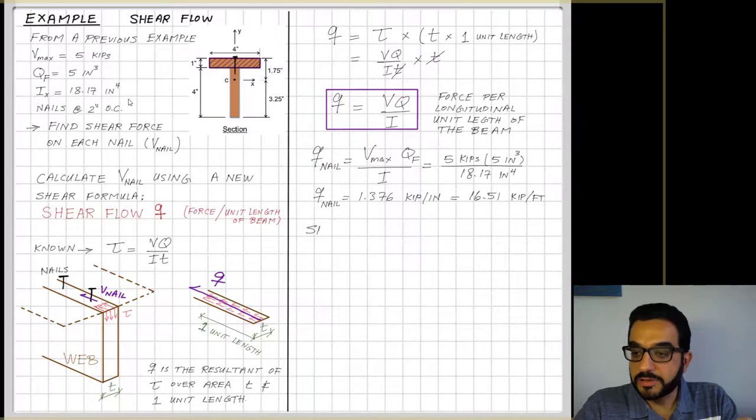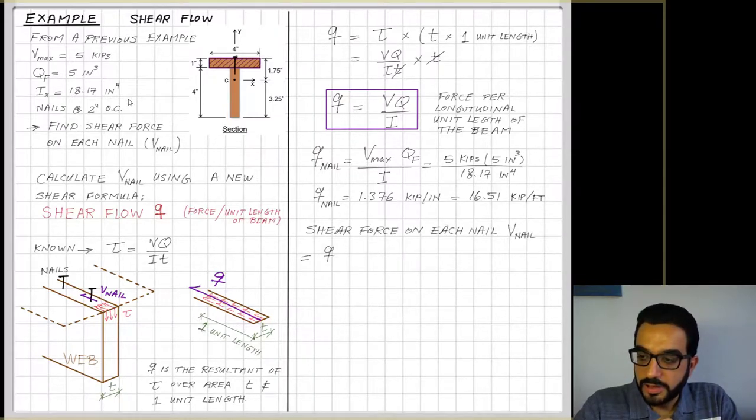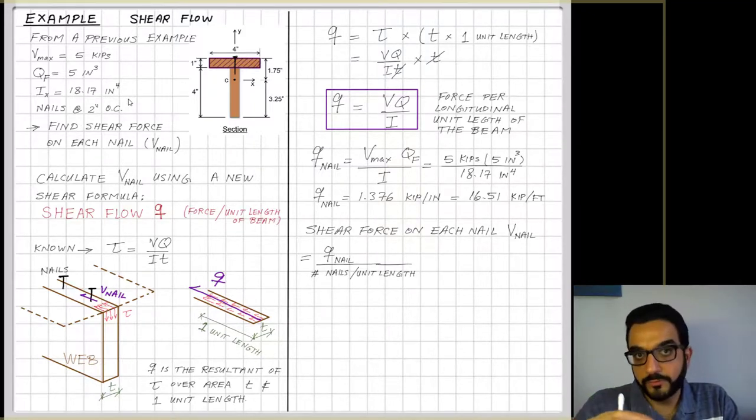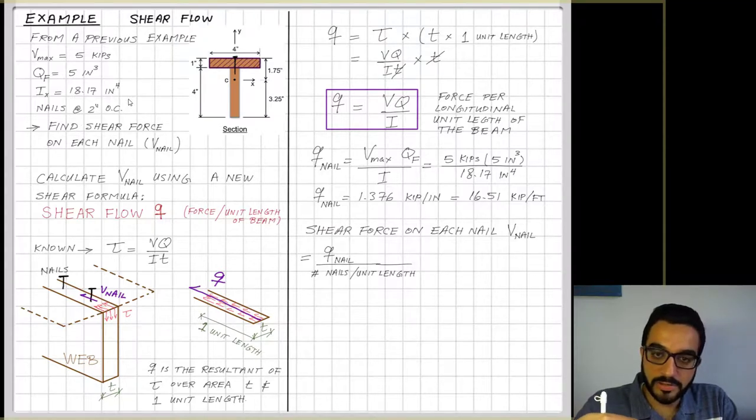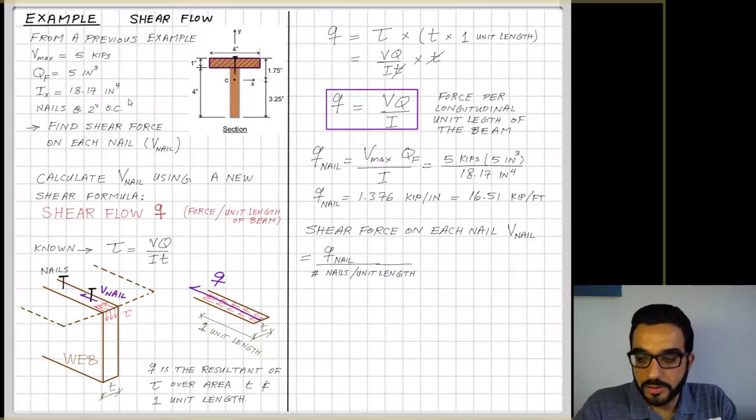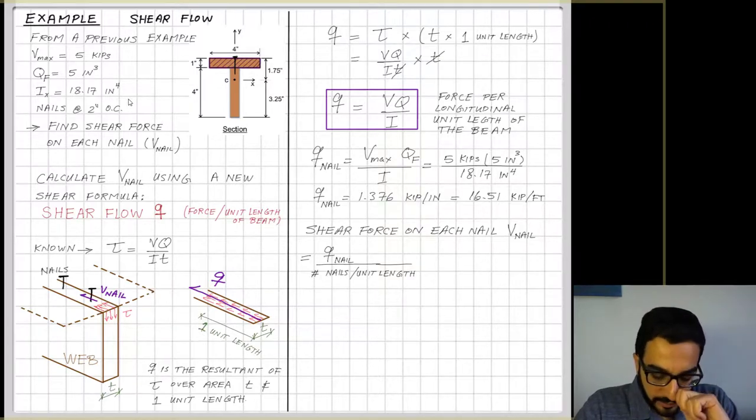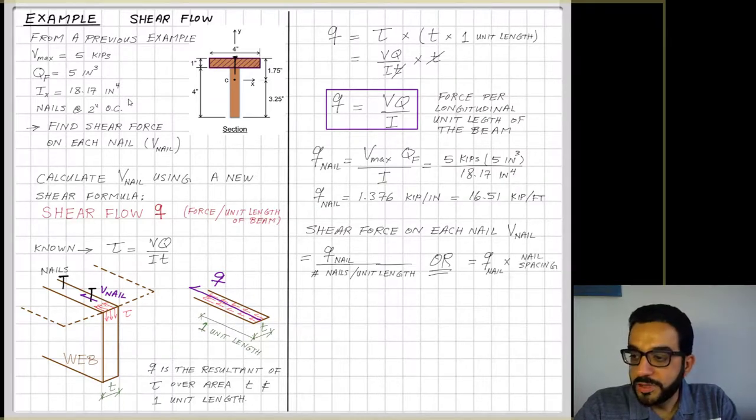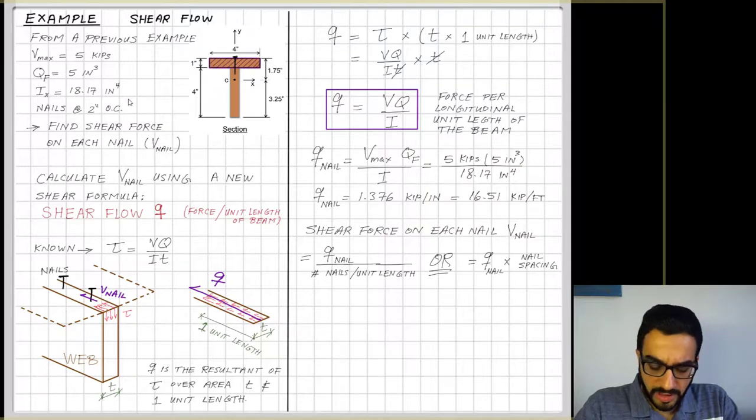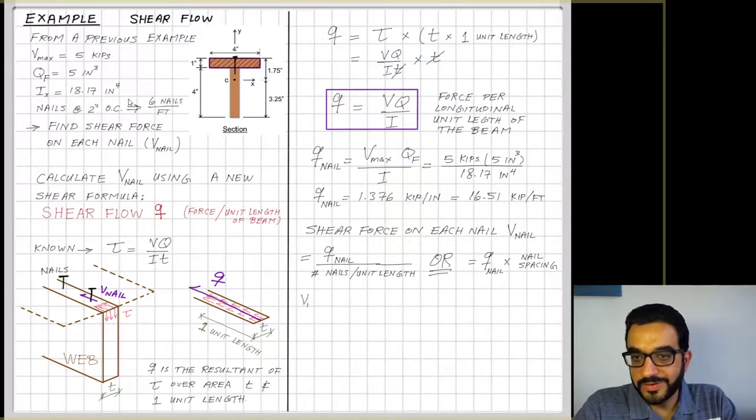Now to get V_nail, the shear force on each nail, I can get it using q_nail in two different ways. The first one is that q_nail happens in a unit length, so in a foot, that's the total shear flow in a unit length along the beam. If I know the number of nails responsible for holding it in this unit length, I will divide q_nail over the number of nails per unit length to get the force in each nail. Or another way is to multiply q_nail times the nail spacing.